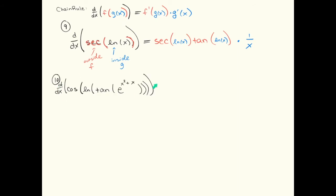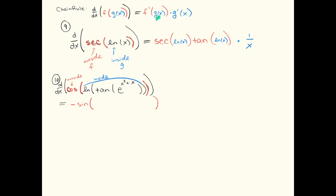Now let's do a doozy of a problem. The great thing about doing the chain rule without writing out all those u's is that you can do many chain rules within each other. We start on the outermost function, which is the cosine, and the inside is going to be all of this stuff — the ln of tangent of e to the x squared plus x. The derivative of cosine is negative sine. Following the chain rule, plugged into the f prime, I should have my inside function g of x just copied down. And now I need to multiply times the derivative of the inside function.